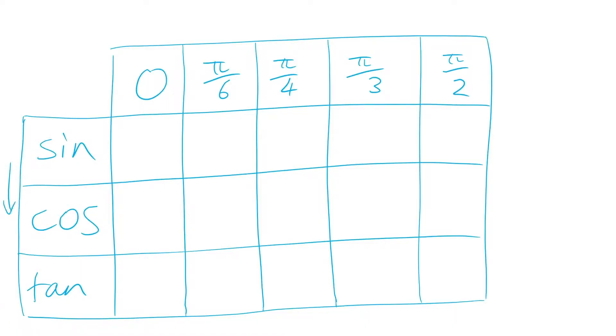My preference is to draw out a quick table like this. We've got sine, cosine, tan along one side, and we've got all the angles along the other side.